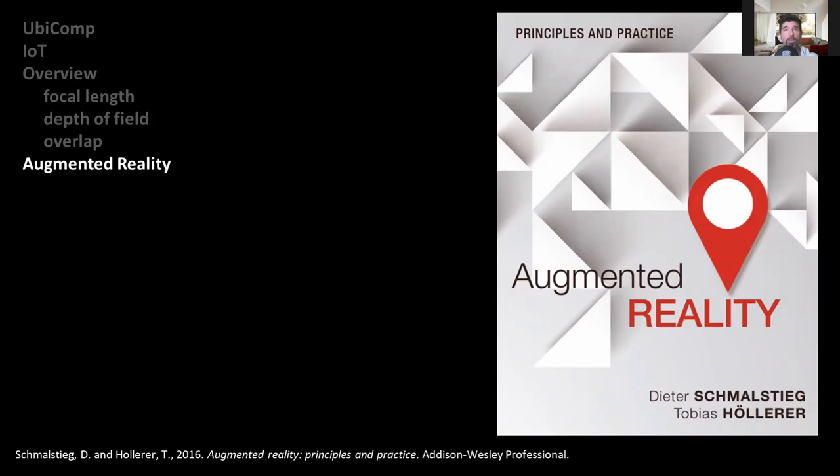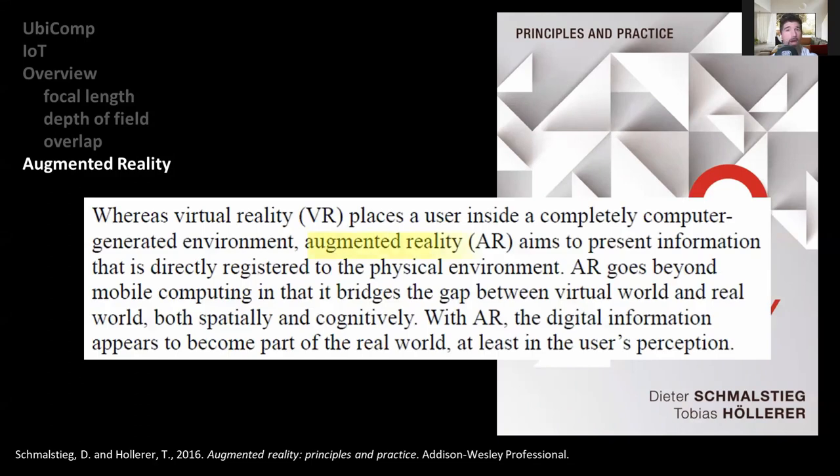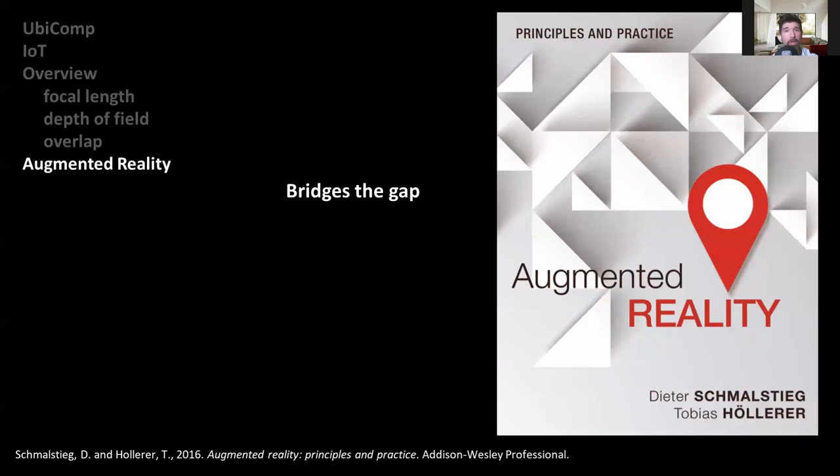In order to finally define it, we can take a look at this book and see that augmented reality, AR, aims to present information that is directly registered to the physical environment, and AR goes beyond mobile computing in that it bridges the gap between the virtual world and the real world, both spatially and cognitively. Nowhere can we see anything related to the visual appearance, only that it deals with bridging the gap between the real and the virtual through the physical space and our perception.